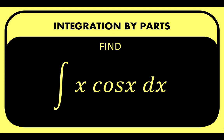Let's analyze our problem together. What we are given here is an antiderivative of a product of two functions — x is one function, cosine of x is another function — and we are asked to find the antiderivative of the product of these two functions. Integration by parts is a special method of integration that is often useful when two functions are multiplied together, as in the case of our given problem. We can think of integration by parts as an integral version of the product rule of differentiation.